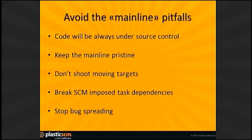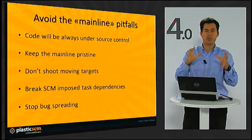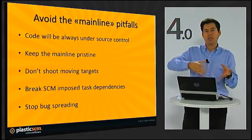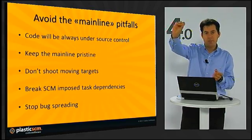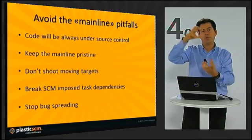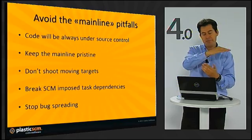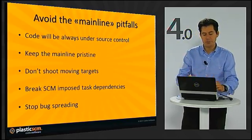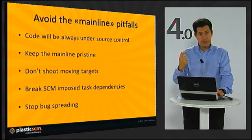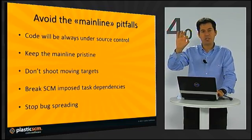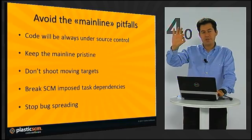First of all, the code should always be under control. In a situation where you have been working on a difficult task for a couple of days but cannot check in to the mainline because someone else is working there, or you risk breaking the build — if you have your own branch for the task, you can commit as frequently as you want. Second, the mainline should be kept pristine, kept clean, containing only stable baselines.